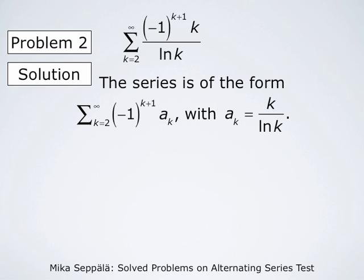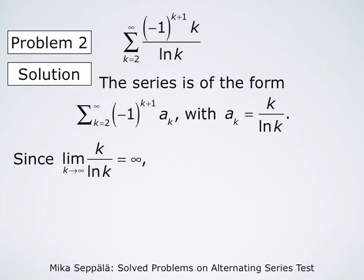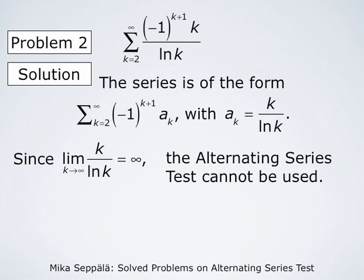This is an alternating series with general term ak being k divided by natural logarithm of k. This is a positive number for all k, but it can easily be established that the limit of ak — the limit of k divided by natural log of k — is infinity. So the ak's do not form a decreasing sequence and the limit of the ak's is not 0. Therefore, the alternating series test cannot be applied to this series.